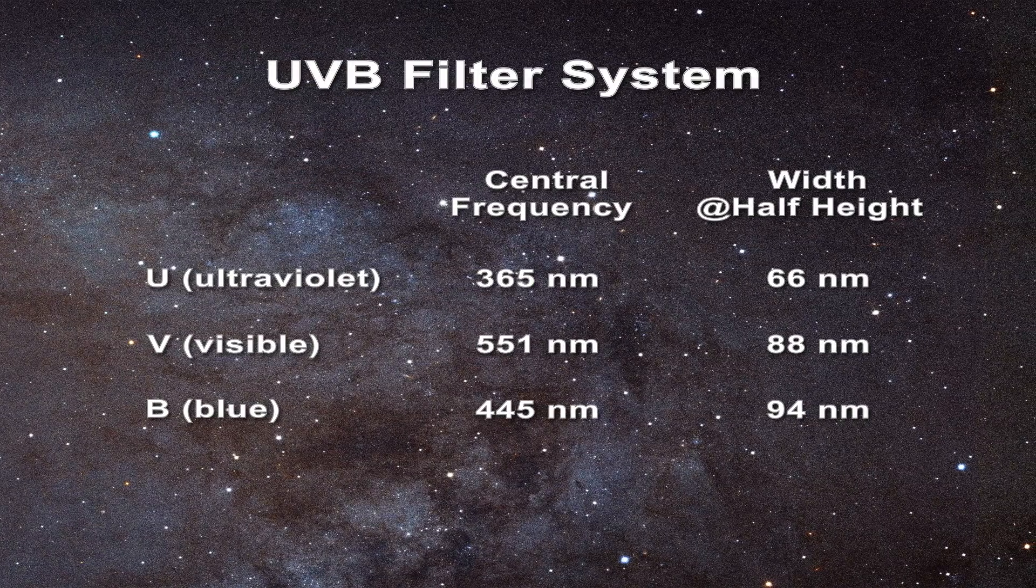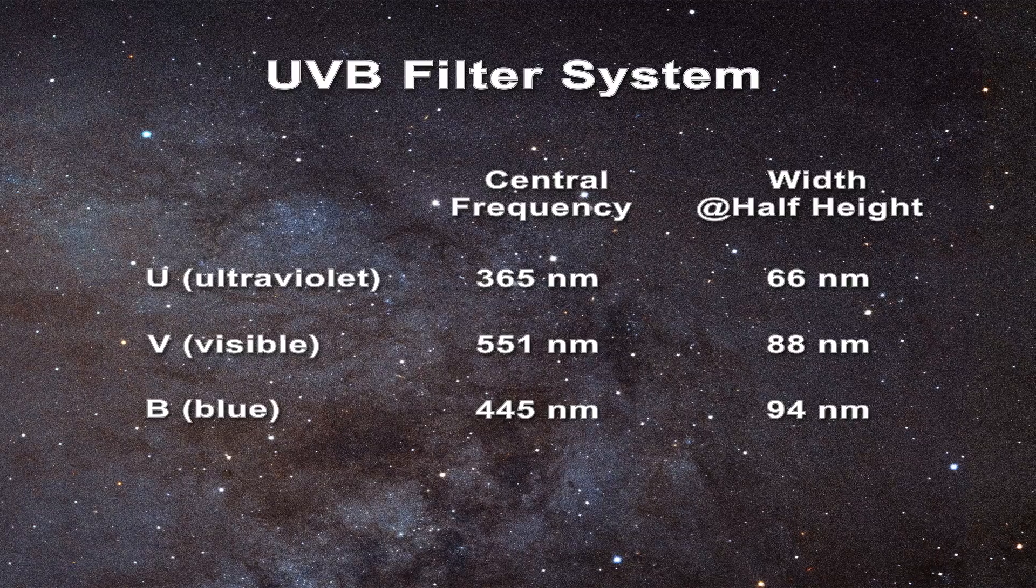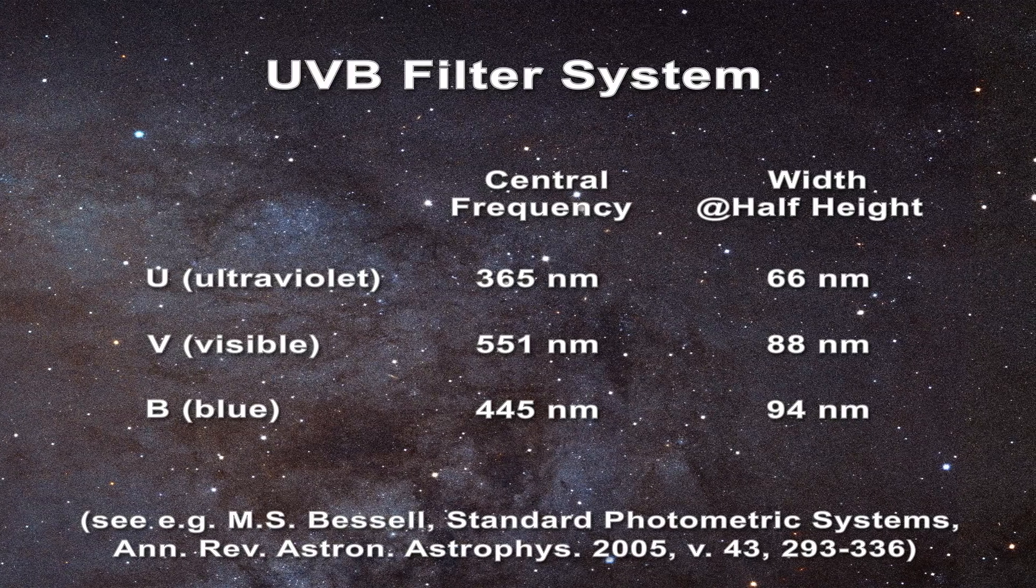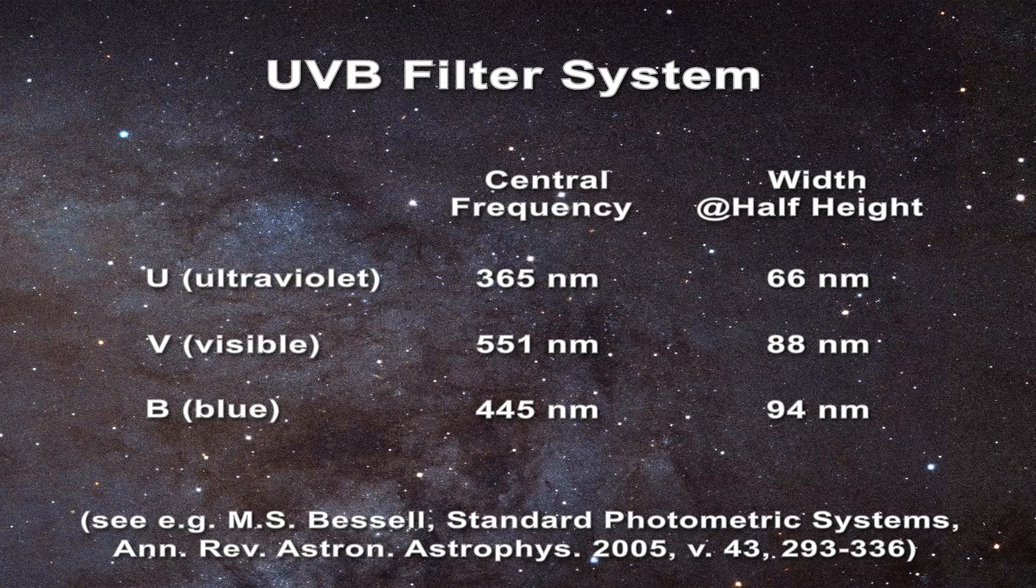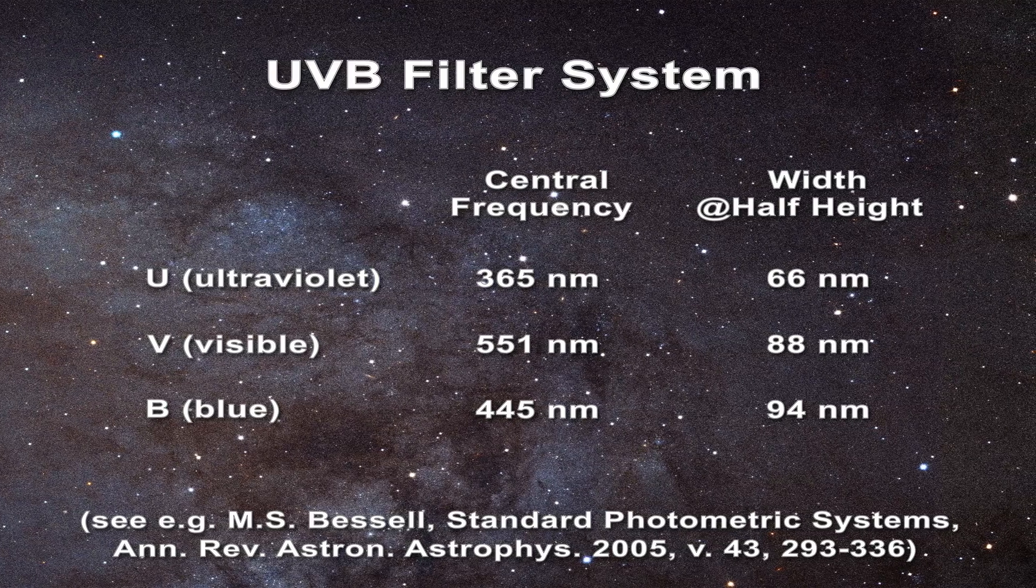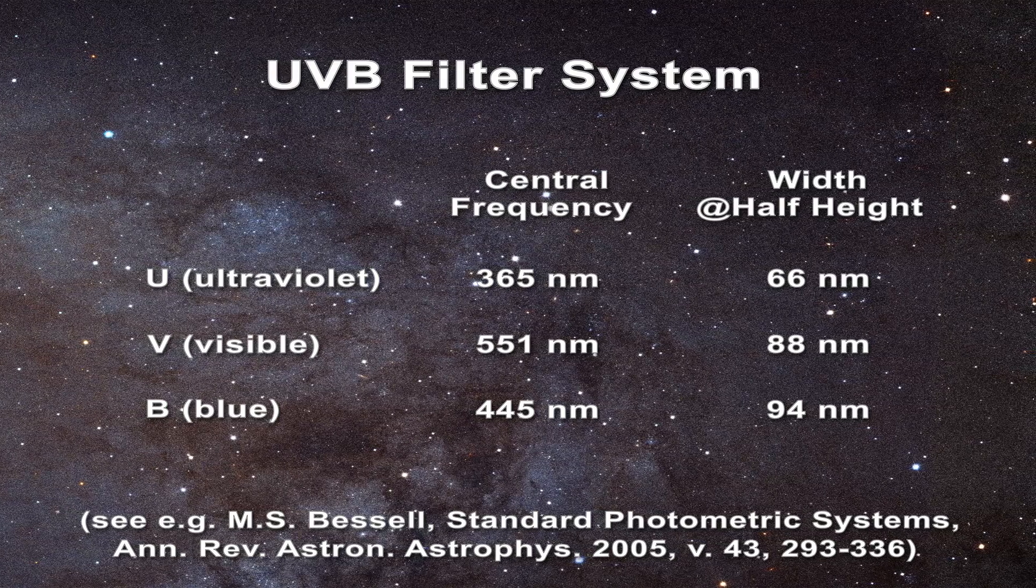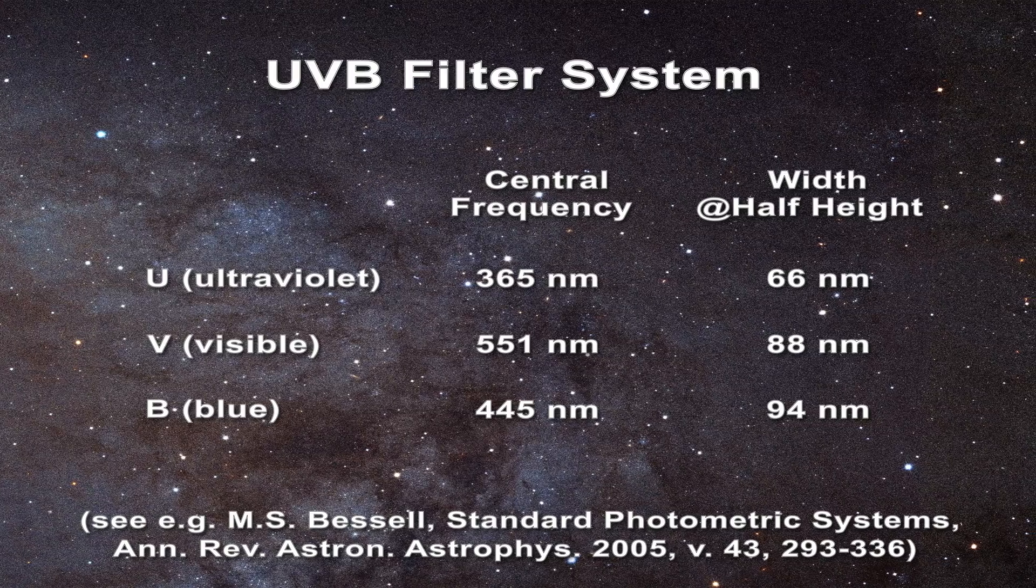There are many filter systems which can be utilized to precisely determine the color of a star. But the most common is the UVB scheme. U stands for ultraviolet, B for blue, and V for visual or yellow.